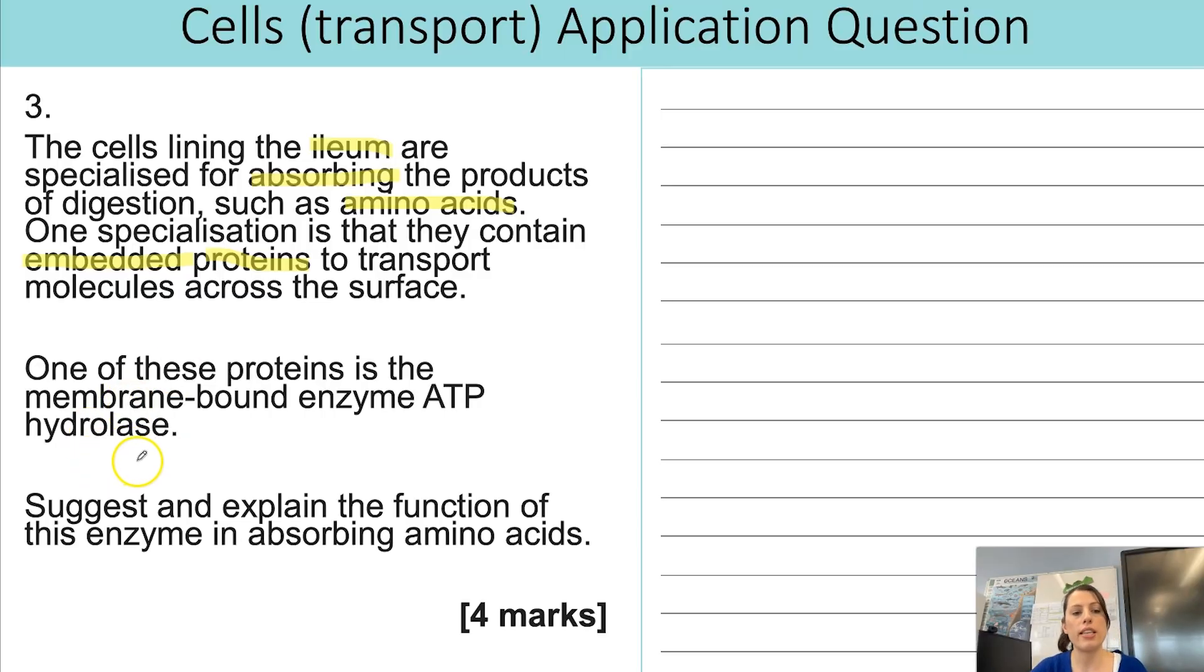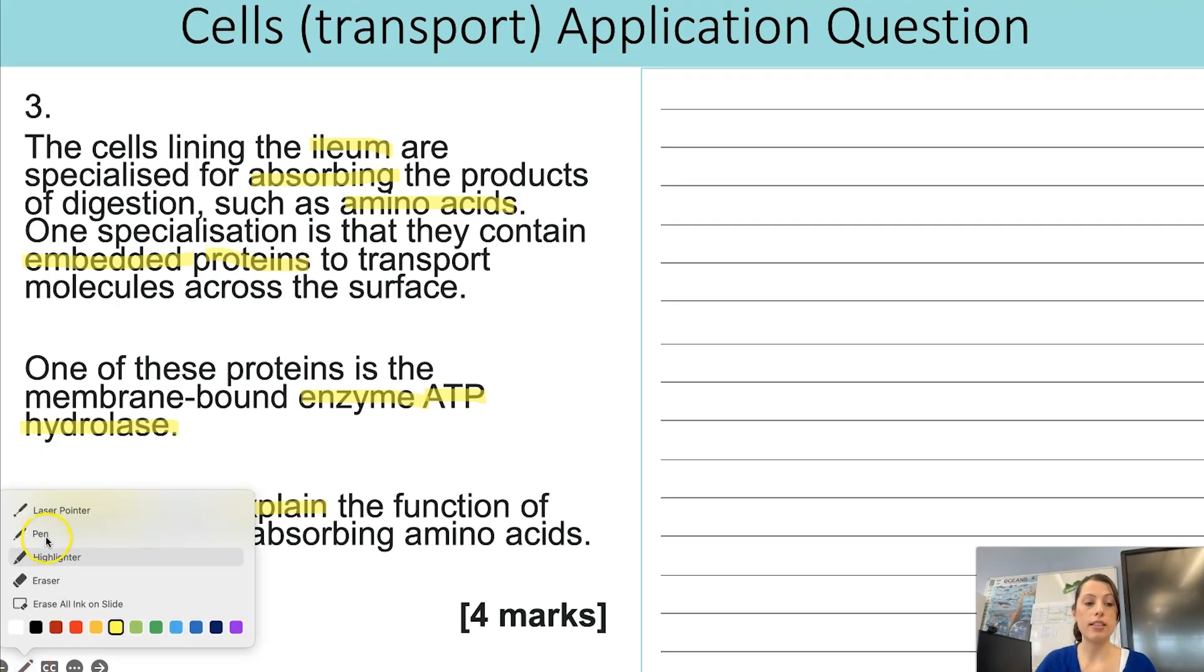But the new information is one of these proteins is the membrane bound enzyme ATP hydrolase. So that is an enzyme you're familiar with from biological molecules, but they're applying it now to this context. Suggest and explain the function of this enzyme in absorbing amino acids. So it's four marks. So we have to suggest what the role is and then explain why that role is so important in absorbing amino acids.